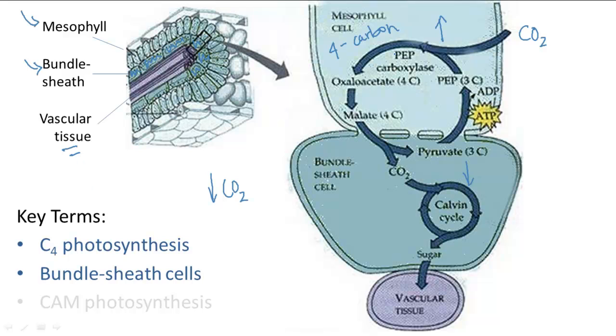The mesophyll cell becomes the site for the organic acid cycle. It converts CO2 into this organic acid, but then converts it back into CO2 to be pumped into the bundle sheath cells for the Calvin cycle to start. Then the Calvin cycle will go on as usual, create sugar, and pump the sugar into the vascular tissue.